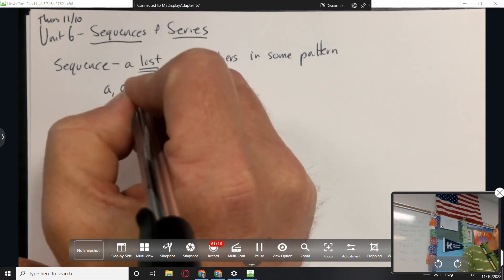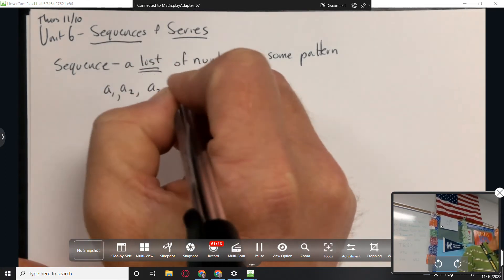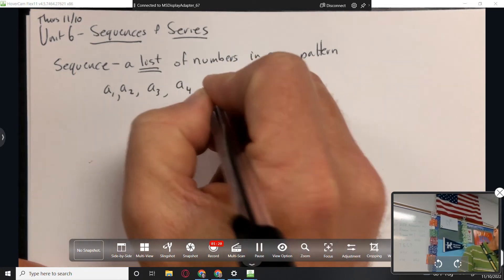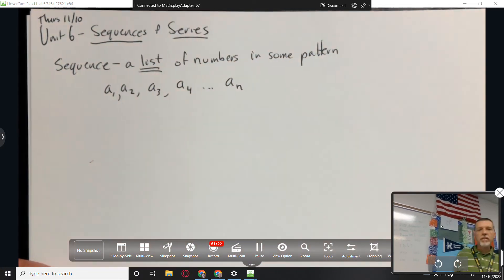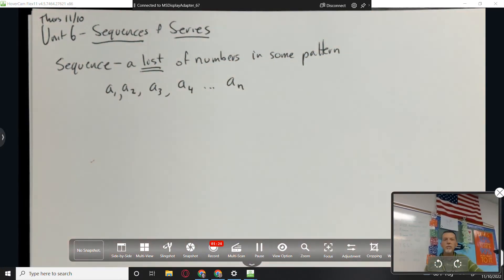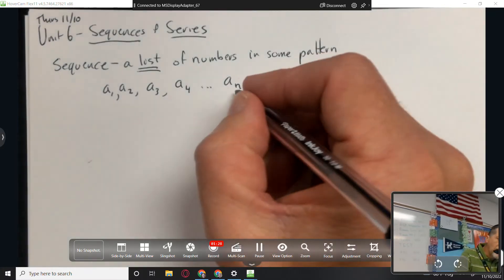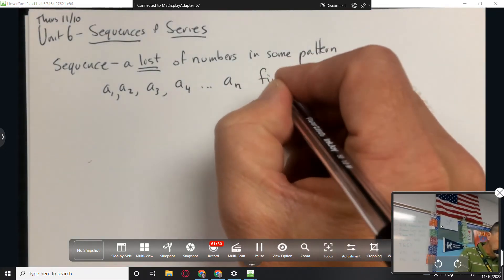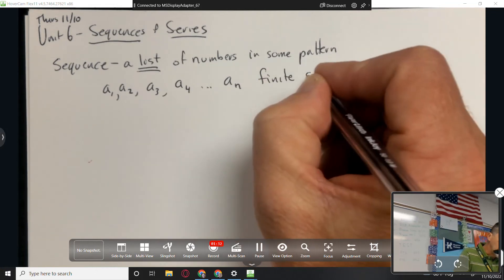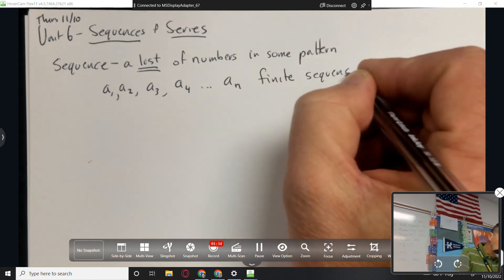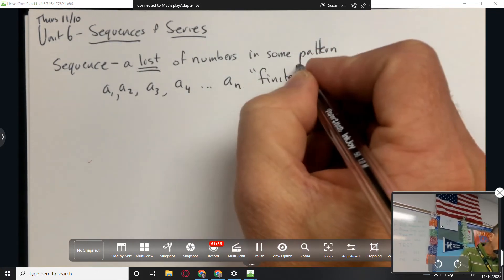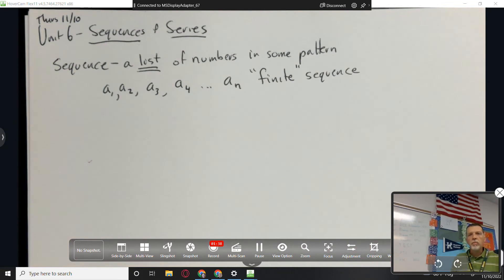A list of numbers, but the numbers have a pattern to them, and a lot of time, it'll be our job to figure out what the pattern is. A list of numbers in some kind of pattern. That's what a sequence is. A1, comma, A2, comma, A3, comma, A4, all the way up to A-N. A-N would be the last term.